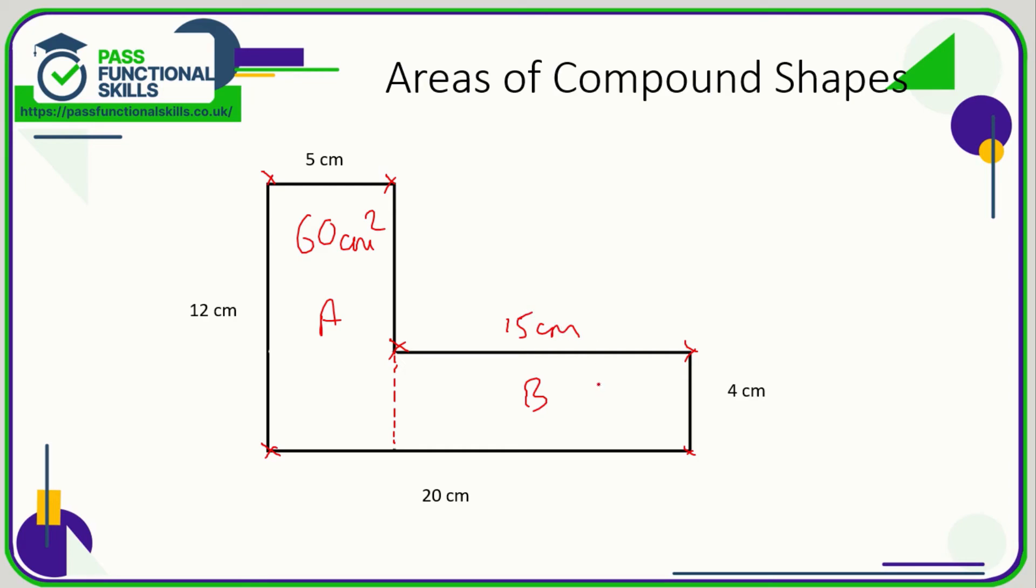And 4 times 15 is 60 as well. That's quite coincidental that these are the same. So the area of this shape is 60 plus 60, so 120 square centimeters. With compound shapes, break it down into more manageable and easier shapes.